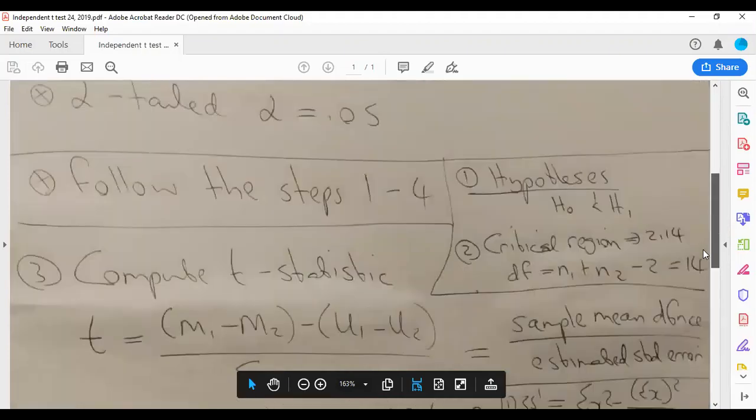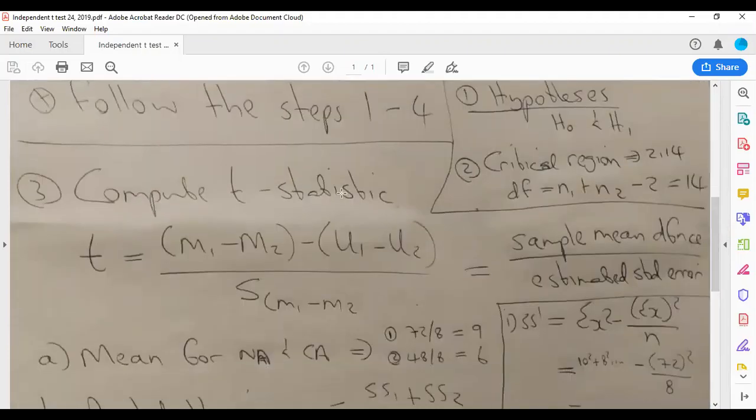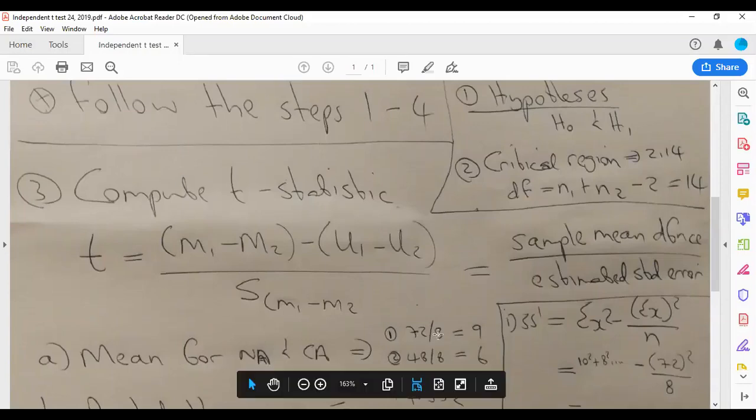This is step number three: calculate t-statistic. It's t equals m1 minus m2. We need these means—it's the mean for each group. To calculate the mean, you add these scores: 10 plus 8 plus 7 plus 9, so the answer is 72 divided by 8, that's 9. And then for the second group, it's 48 divided by 8, that's 6.